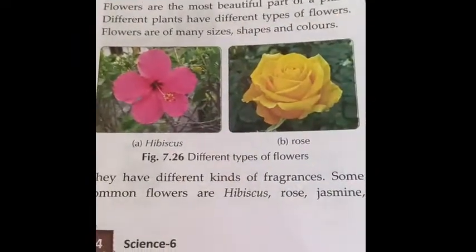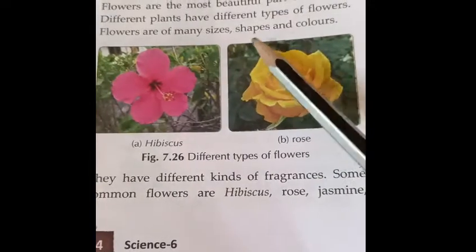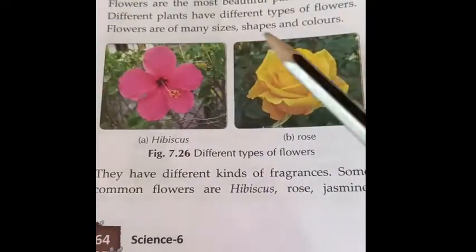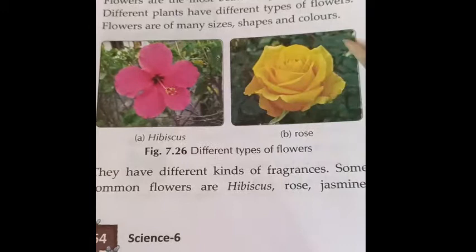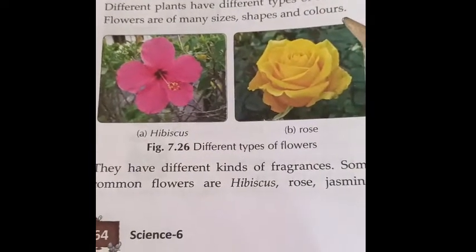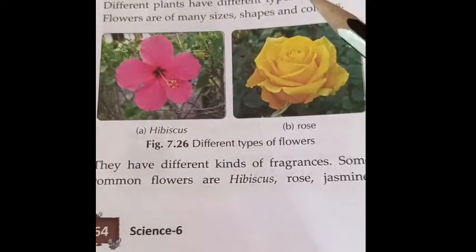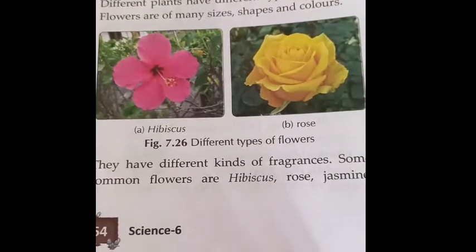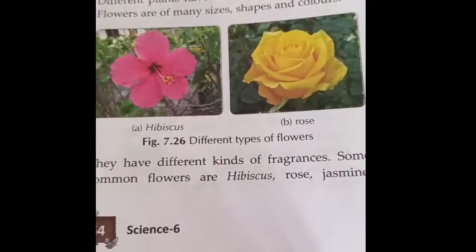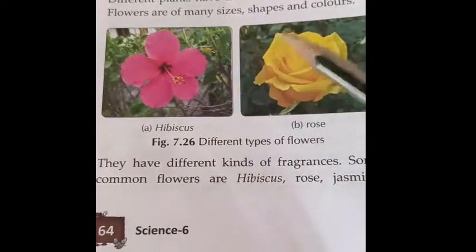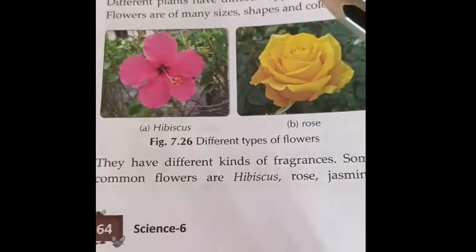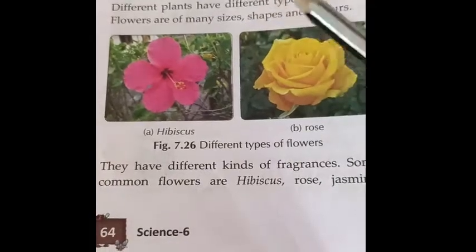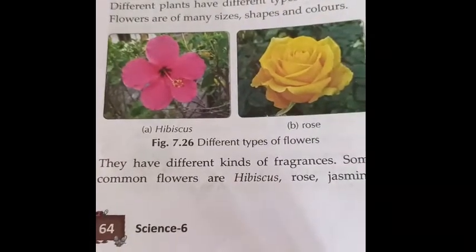Flowers are the most beautiful part of a plant. Different plants have different types of flowers. Flowers are of many sizes, shapes, and colors. There is a great variety of plants, and each has different types of flowers with different sizes, shapes, and colors. The flower is the most important and most beautiful part of a plant.